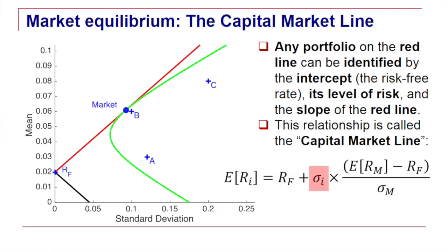And then there is a level of risk for that portfolio which is sigma I, which multiplies the slope of the red line. How is the slope of the red line defined?